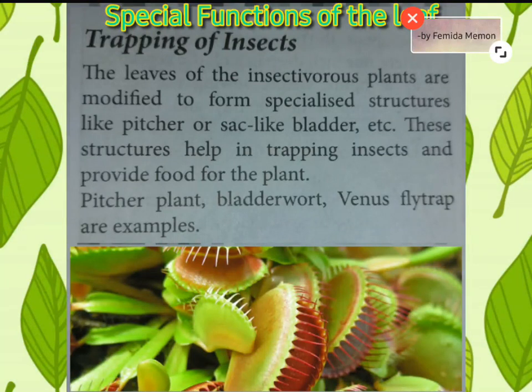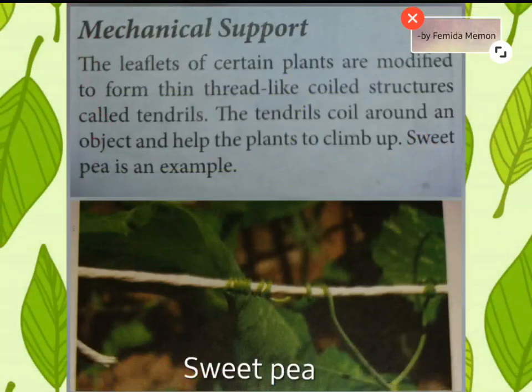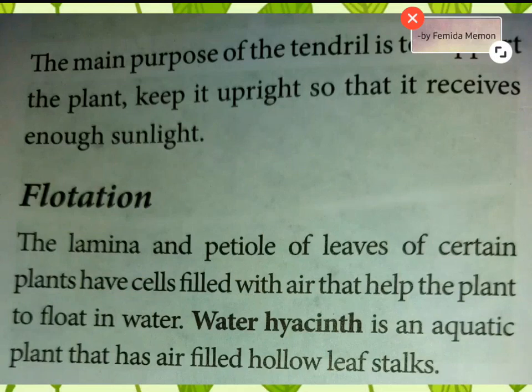Examples are pitcher plant, leadwort, Venus flytrap, etc. Number two, mechanical support: the leaflets of certain plants are modified to form thin thread-like coil structures called tendrils. The tendrils coil around an object and help the plants to climb up. Example: sweet pea. The main purpose of the tendril is to support the plant and keep it upright so it receives enough sunlight.